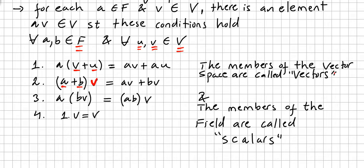The members of the vector space are called vectors and the members of the field are called scalars. Here the scalars are A and B in the field and the vectors are U and V in the set, or in the vector space.